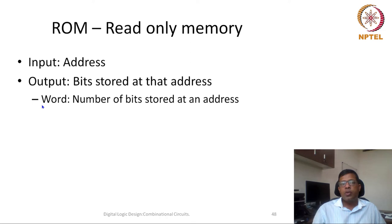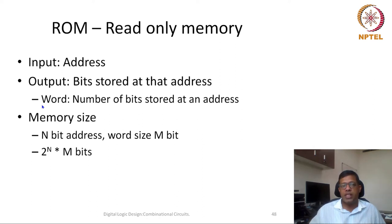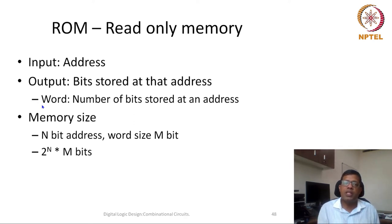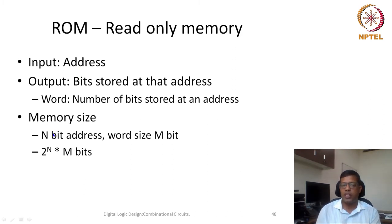What is inside ROM? The total number of memory cells: if n is the number of bits in my address and the word size is m bits, then the total number of memory cells is going to be 2^n × m bits. At every address, m bits are stored. If the number of address bits is n, the total number of addresses is 2^n. So 2^n × m would be the total memory cells present in this read-only memory.